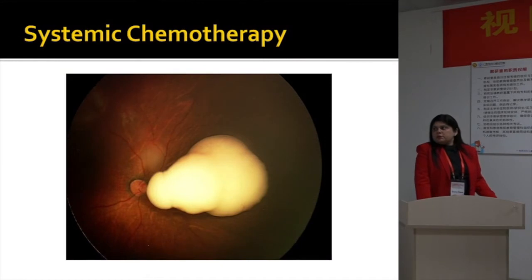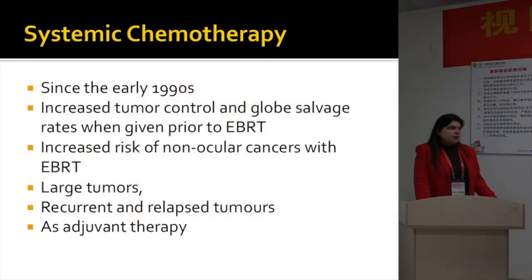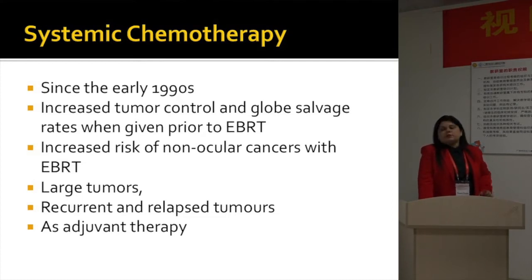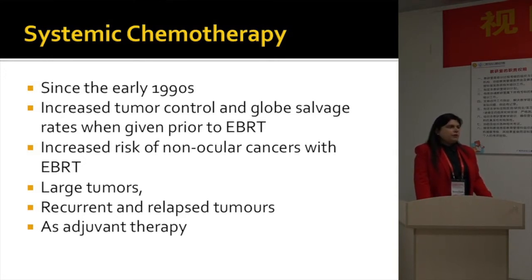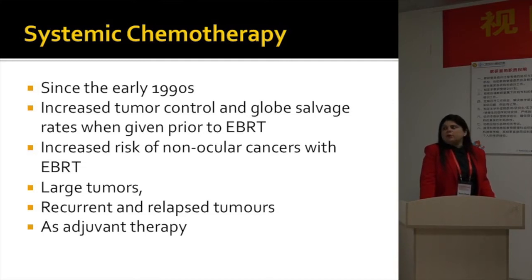When do we use systemic chemotherapy? How do we use it? And which systemic chemotherapy to use? There is nothing new about it — it has stood the test of time since the early 1990s, when its role was recognized in providing increased tumor control and lower salvage rates when given prior to external radiotherapy, which was the mainstay of treatment. There was also recognition that EBRT increases the risk of non-ocular cancers, which is one reason systemic chemotherapy became more popular.